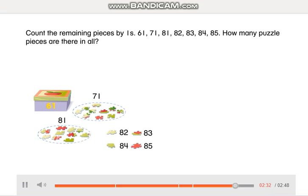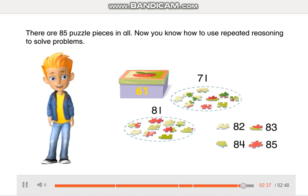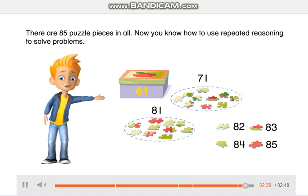How many puzzle pieces are there in all? Okay, guys, this is so beautiful. We have 61, 71, 81 — and these remaining pieces we count by ones: 81, 82, 83, 84, 85. That means there are 85 puzzle pieces in all. Yes! Very good! There are 85 puzzle pieces in all.